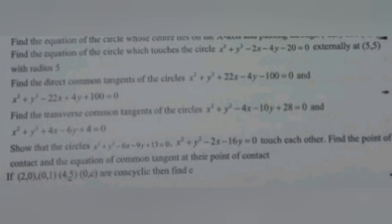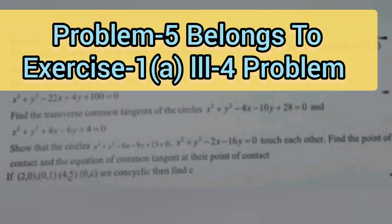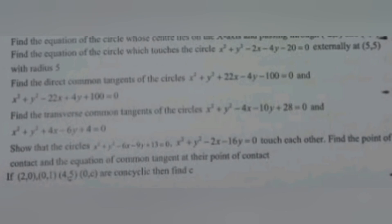The fifth problem is: if (2, 0), (0, 1), (4, 5) and (0, C) are concyclic, then find C. This is also a very very important concyclic problem. This problem belongs to Exercise 1E, Roman number 3, problem number 4. This is a repeated problem in concyclic model problems.